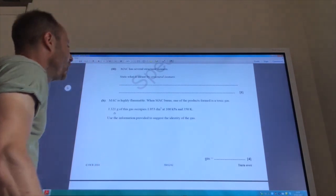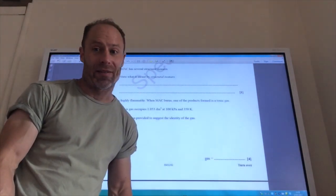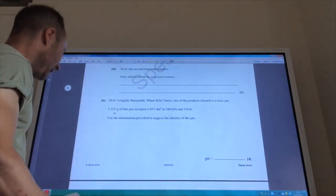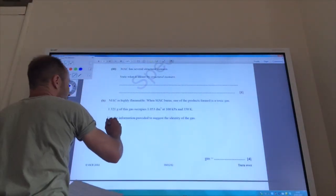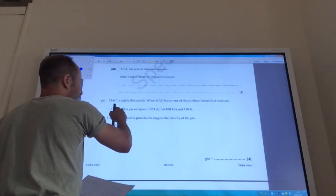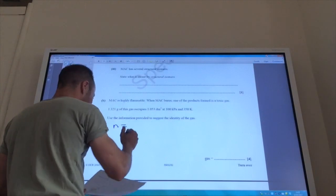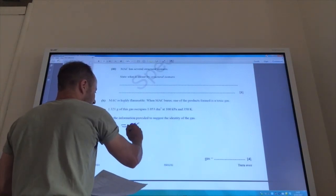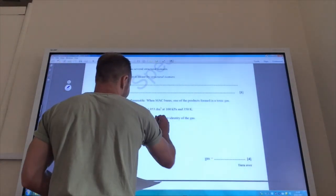Mach is highly flammable. When it burns, a toxic gas is formed. We probably could guess what it's going to be, but we're going to have to work this one out. So, you need to use the ideal gas equation for this. It's given me a mass, and then I can find the number of moles from this. N, as you know, equals PV over RT. Convert everything to the right units.